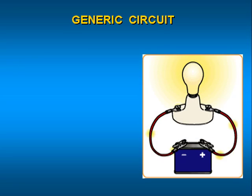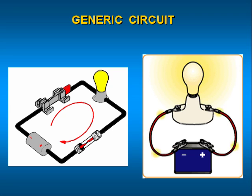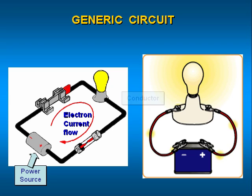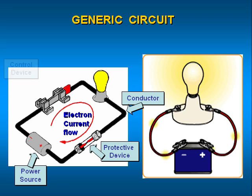The generic circuit is comprised of basic components such as a power source, conductors, protective devices, control devices, and loads. In order for current to flow in a circuit, a closed conducting path must exist for the electrons to flow through.